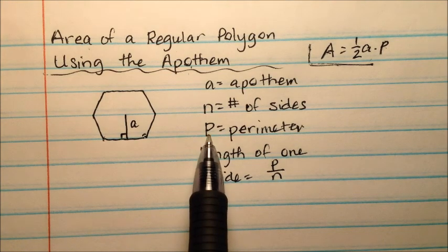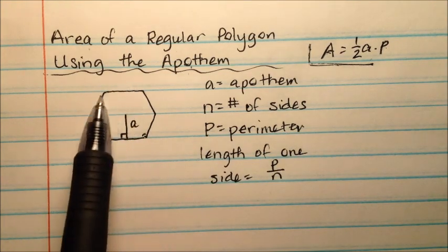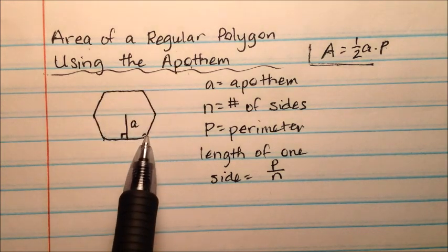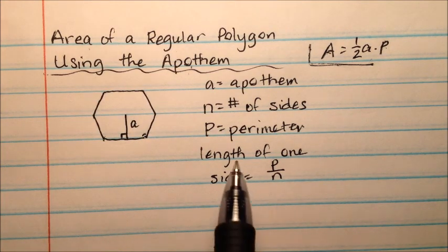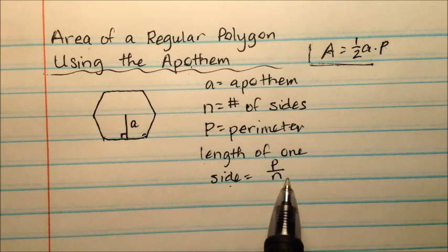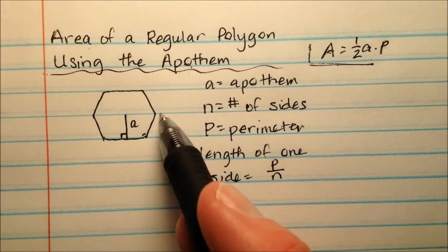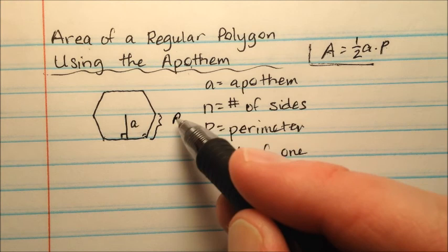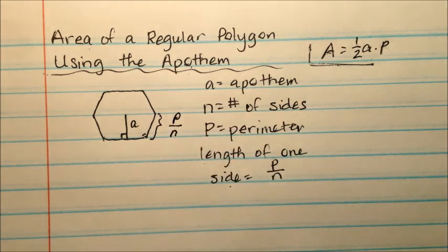So our P is our perimeter, that's the distance around the figure or all the lengths of the sides added together. And we'll also use the notion that the length of just one side is the entire perimeter divided by the number of sides we have.